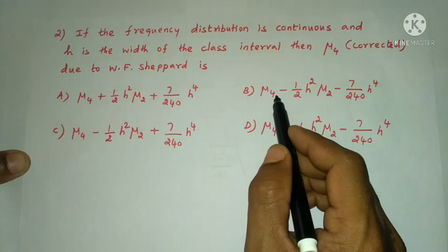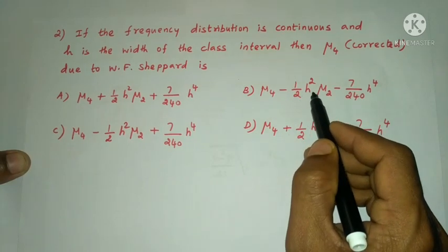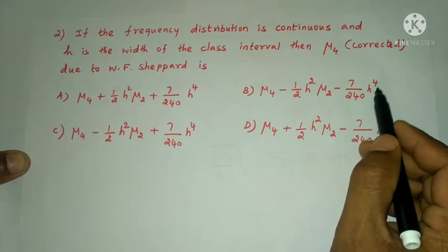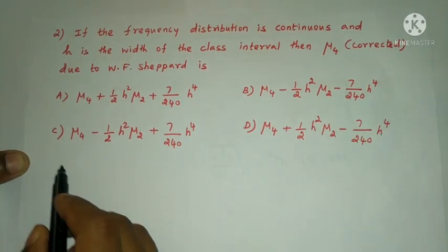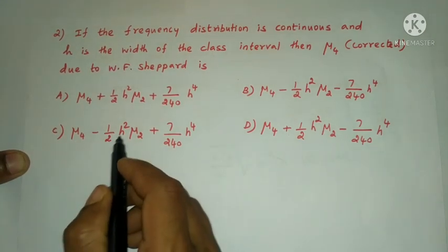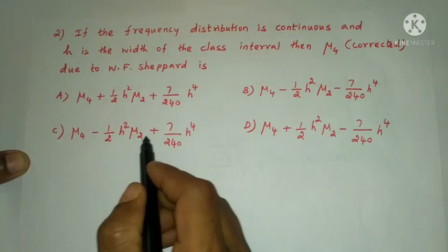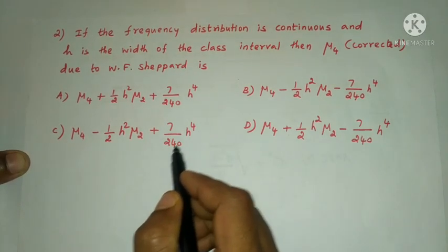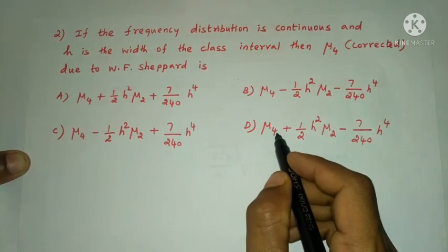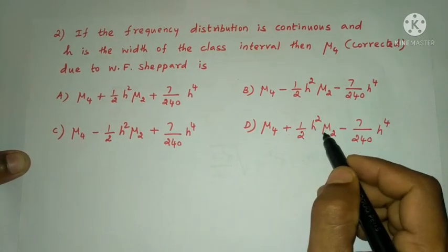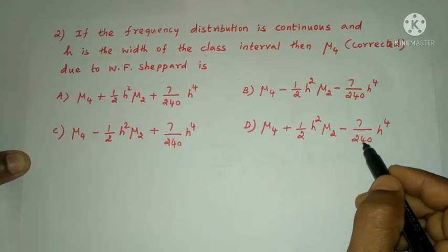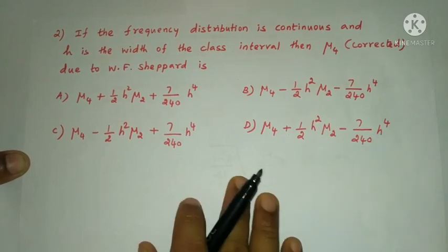Option B: mu4 minus 1/2 H squared mu2 minus 7/240 H to the power 4. Option C: mu4 minus 1/2 H squared mu2 plus 7/240 H to the power 4. Option D: mu4 plus 1/2 H squared mu2 minus 7/240 H to the power 4.